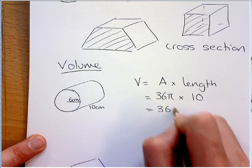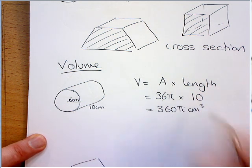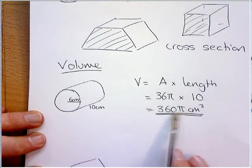So, 10 of those is 360 pi. And it's three-dimensional now, so it's centimeters cubed. Again, if you had a calculator, you'd just use the pi button.